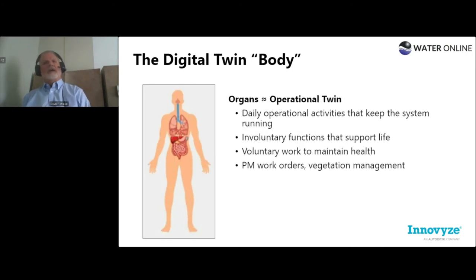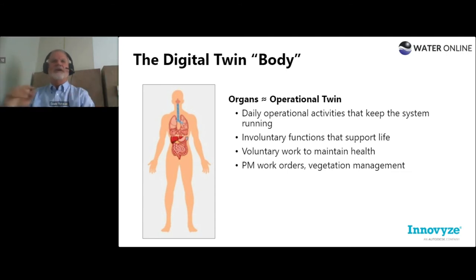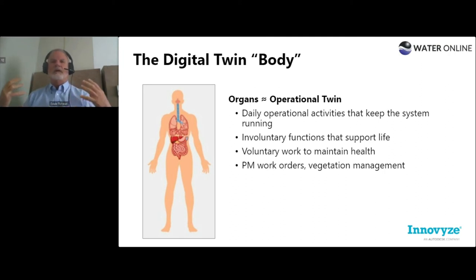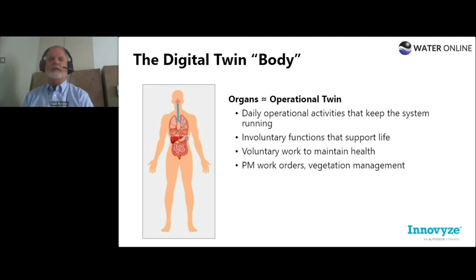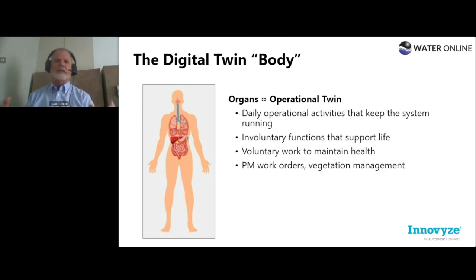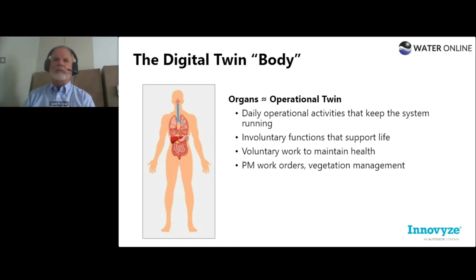On the operational side — think of the organs, systems that keep the system running: daily operational activities that many times are involuntary, just chugging away to keep life support going, and others that are voluntary — like maintenance work to maintain the health of the system. Preventative maintenance work orders, vegetation management, all those things done on a daily basis — that's what you'd see in your operational twin. For water and hydraulic modeling, think of the circulatory system: flow and pressure — that's truly what needs to be in your operational twin.